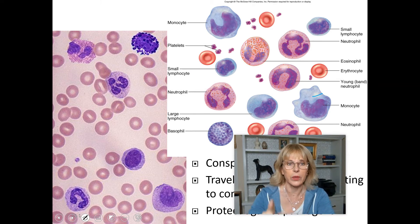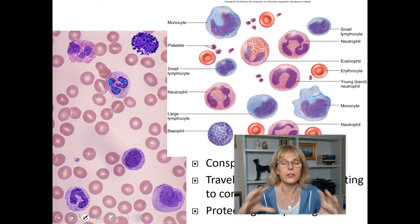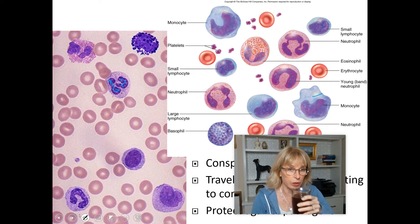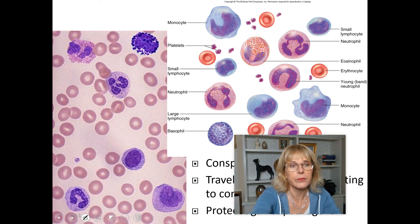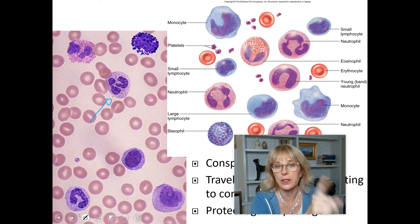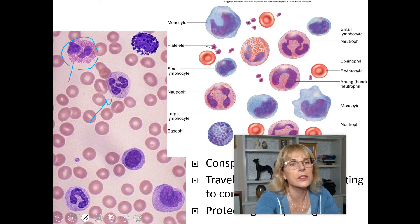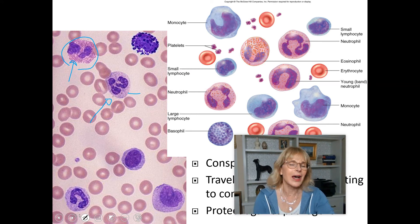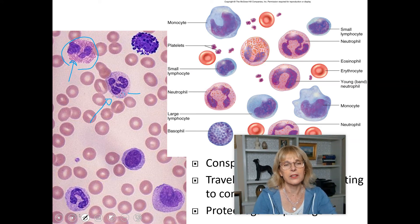Then we have what I'll just call the 'weird nucleus.' All of that is the nucleus — it looks like someone took it and squeezed and wrinkled it all up. That is probably a neutrophil. If it has that kind of weird nucleus, it's either a neutrophil or an eosinophil. Eosinophils technically have a slightly different nucleus, but the key distinction is that eosinophils have definite pink granules, whereas with a neutrophil you kind of have to use your imagination to see the granules in the cytoplasm.